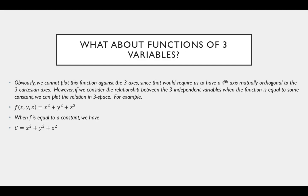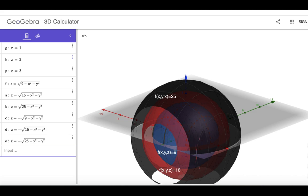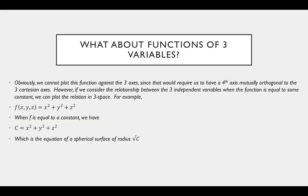For the example I have here, I have the equation of a sphere — technically something four-dimensional. When we set f equal to some constant, we get the equation of a sphere centered at the origin with radius equal to the square root of c. So if we set f = 9, f = 16, and f = 25, we get three spheres of different radii, and these are the level surfaces of the function f(x, y, z) = x² + y² + z².